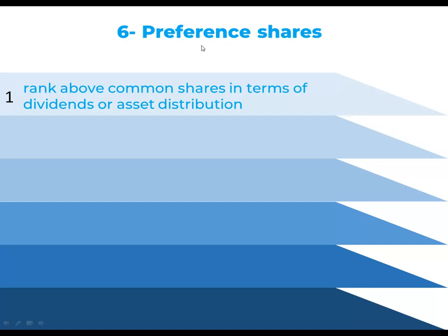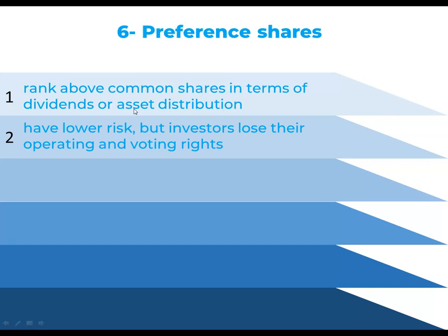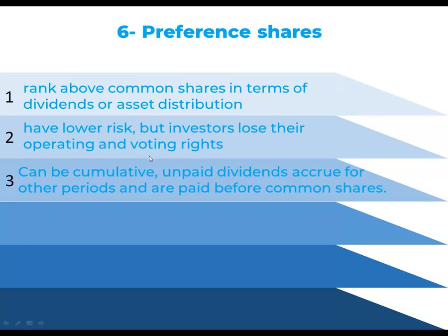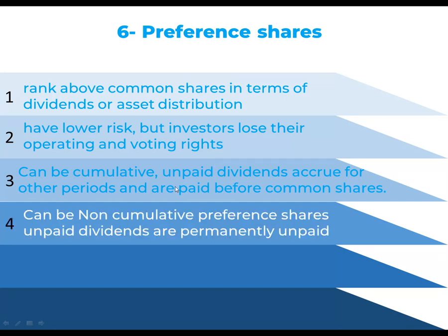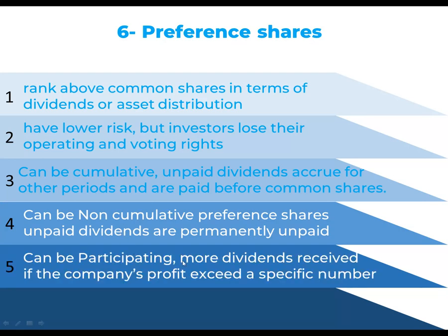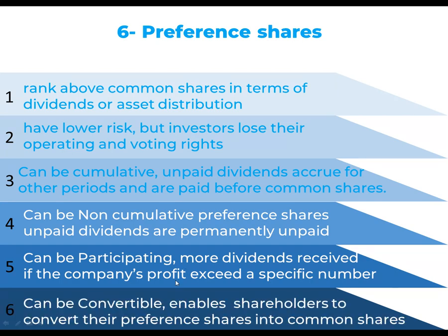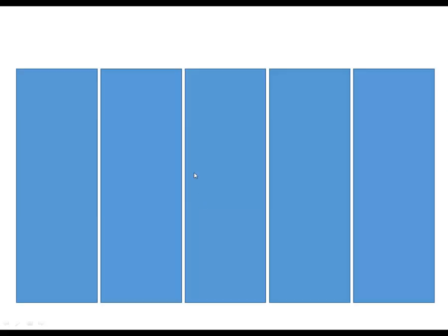Six: preference shares rank above common shares in terms of dividends and have lower risk. However, investors lose their operating and voting rights. They can be cumulative, meaning unpaid dividends accrue for other periods. They can be non-cumulative, meaning unpaid dividends are permanently unpaid. They can be participating, meaning more dividends are received if the company's profit exceeds a specific number — remember, participating is only about dividends, not operating or voting rights. They can also be convertible, enabling shareholders to convert their preference shares into common shares.